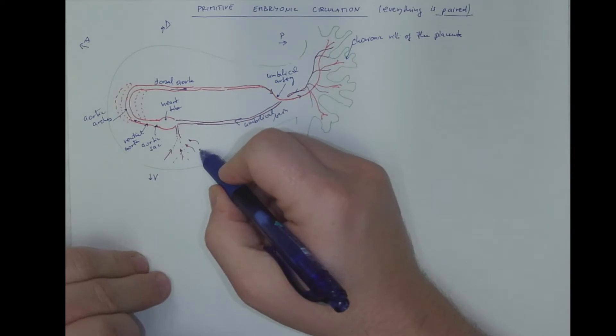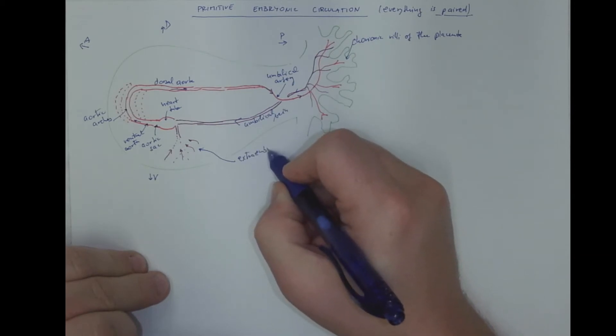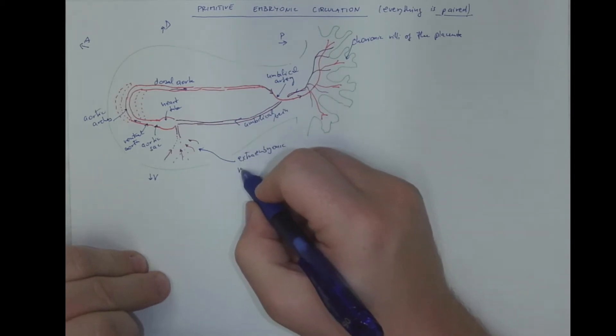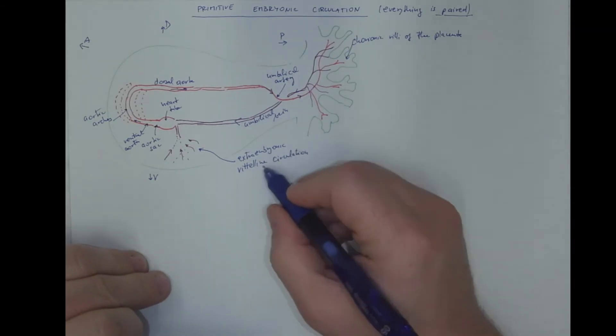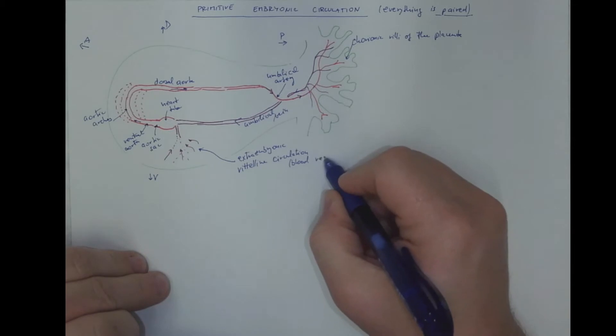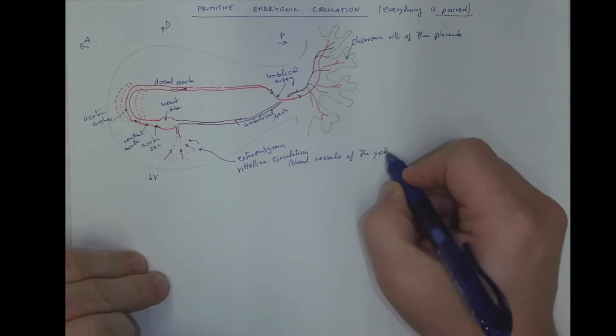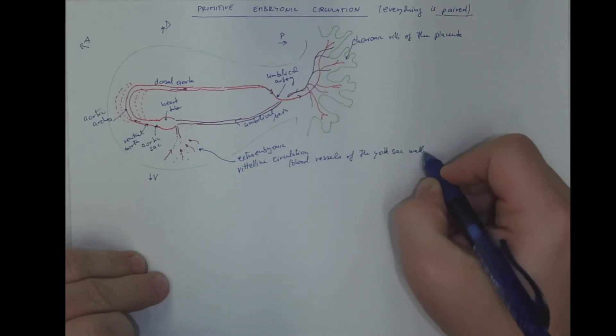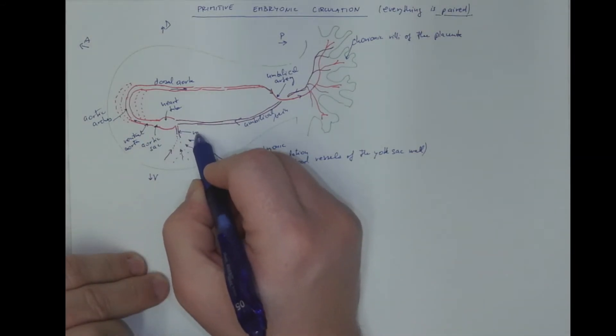Here, this is a scheme of extraembryonic, so-called vitelline circulation, which is just another word for the blood vessels in the wall of the yolk sac. And they will reach the heart via the vitelline vein.